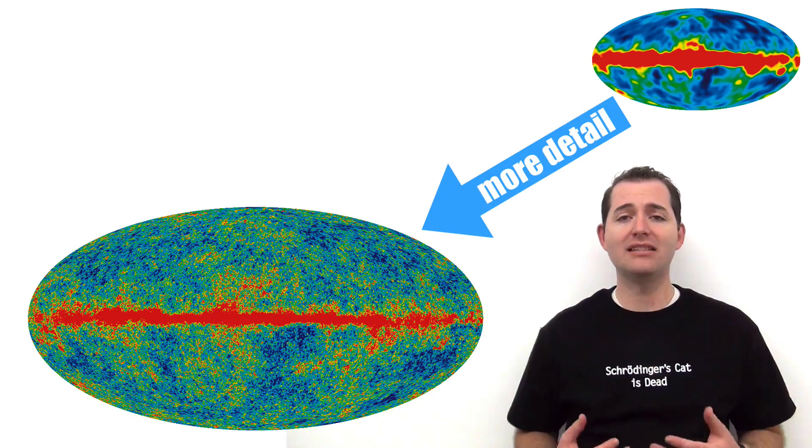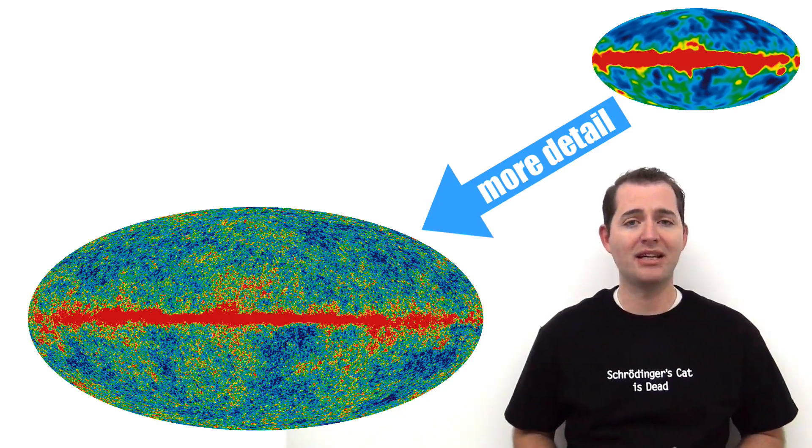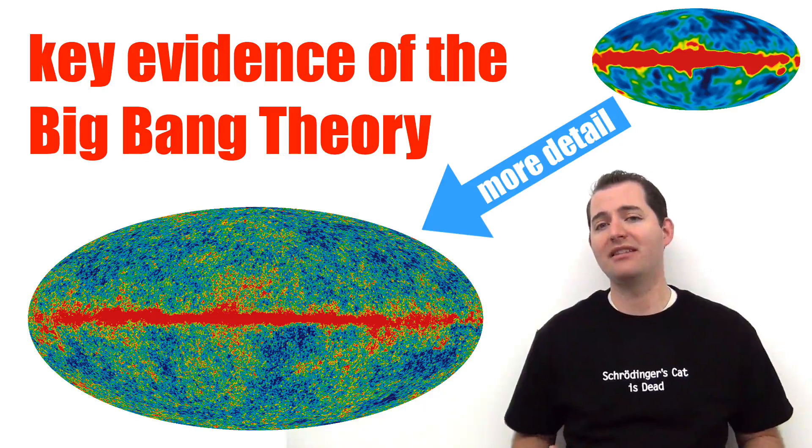As these tools have improved, scientists have been able to find smaller and smaller variations in the CMB. And this has helped to validate the CMB as evidence of the Big Bang Theory.